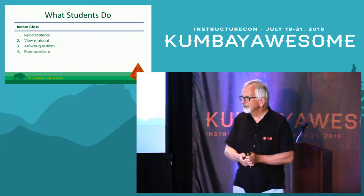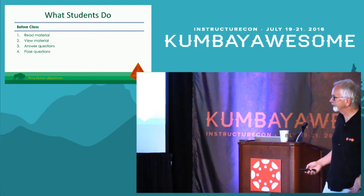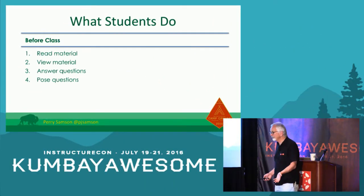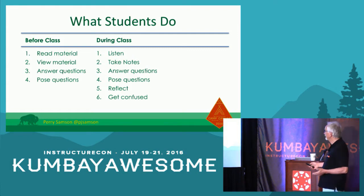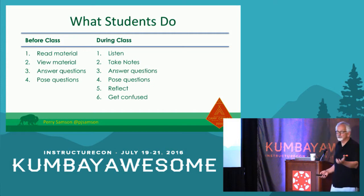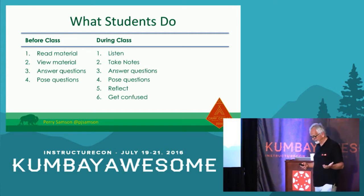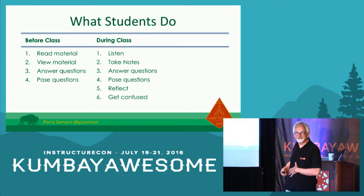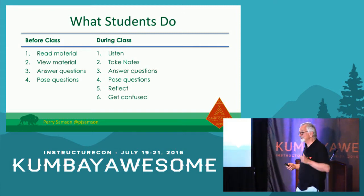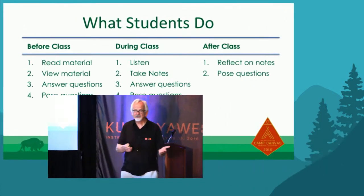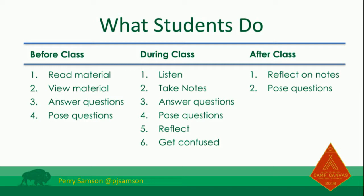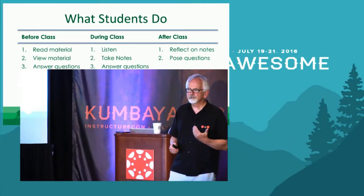The kinds of things students can do: before class, maybe read material, view video if you're flipping your class, answer some questions, do homework, pose some questions. During class, they're going to listen, take notes, answer questions, pose questions back to me, reflect on what I'm saying, and undoubtedly get confused. After class, they reflect on their notes and might again pose questions. What I'm able to do is measure to what degree they do these things, when they do them, how much they do — and does any of that matter? Which of these factors relates to their learning, to the grades they're going to get?